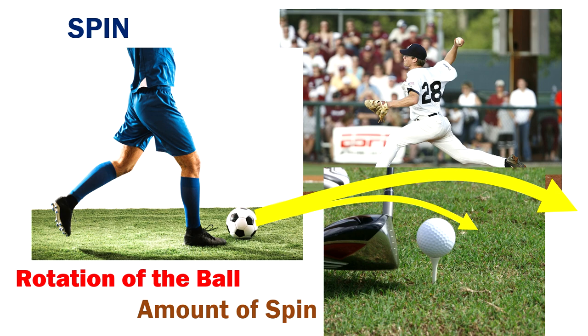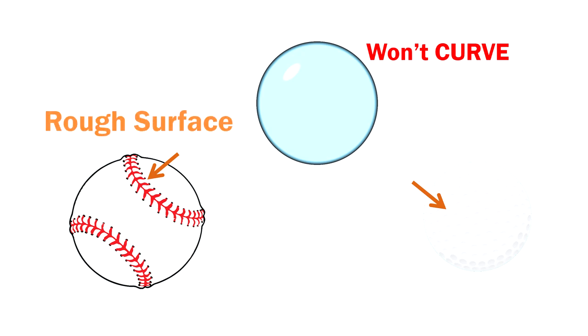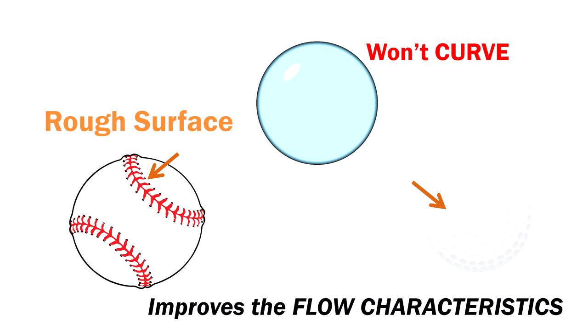The size of the ball does not have an impact on the curved path. But the outer shape of the ball does have a major impact on how much the ball will curve for the same amount of spin. If the ball is smooth, it won't curve much for a certain amount of spin. But if the ball is not smooth and has some stitches or dimples on it, it will curve more for the same amount of spin. This is because the rough surface on the ball improves the flow characteristics across the ball, which improves the air that is displaced, thus providing a better curved path.